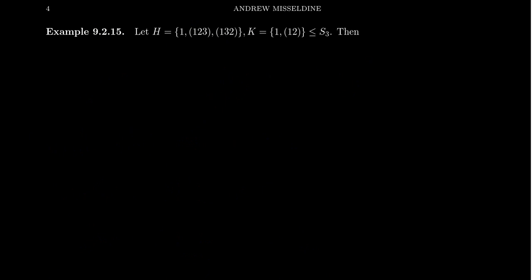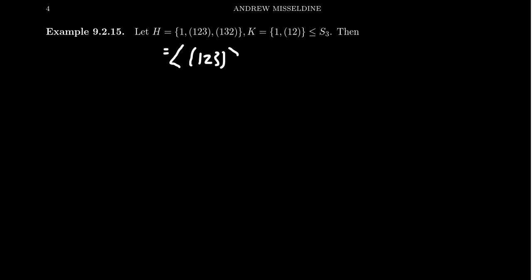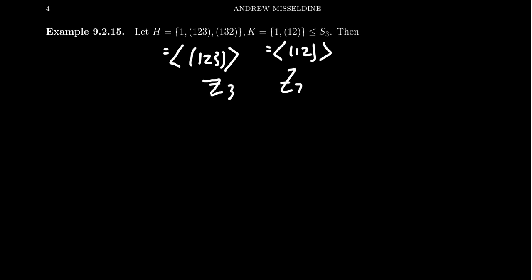Let's do one more example inside the symmetric group S3. Take the subgroup H = {1, (123), (132)}, which is the cyclic subgroup generated by (123) — this also happens to be the alternating group A3. And K = {1, (12)}, the cyclic subgroup generated by (12). So we have a cyclic subgroup Z3 and a cyclic subgroup Z2 in play. Let's consider their product HK.